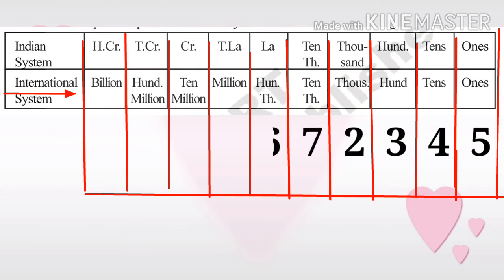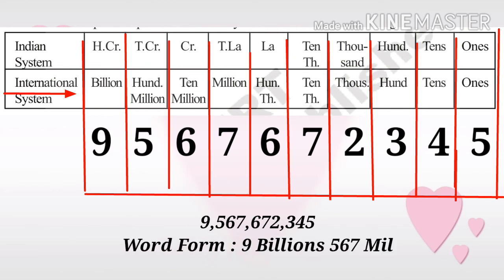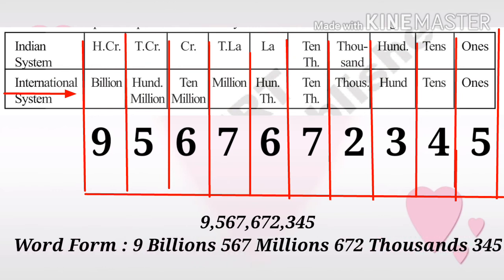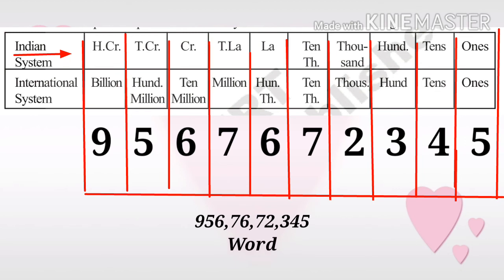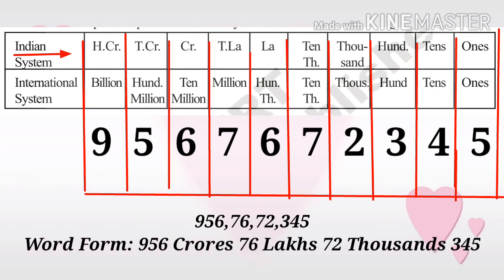Take another problem for conversion from the international system. The number has 9 in billions, so nine billion comma; 5, 6, 7 in millions, so five hundred sixty-seven million comma; then the thousands and remaining digits follow. In the Indian system the same number is represented as: 9, 5, 6 in crores, so nine hundred fifty-six crores; 7, 6 in lakhs, so seventy-six lakhs; 7, 2 in thousands, so seventy-two thousand; and three hundred forty-five. This is all about methods of numeration.